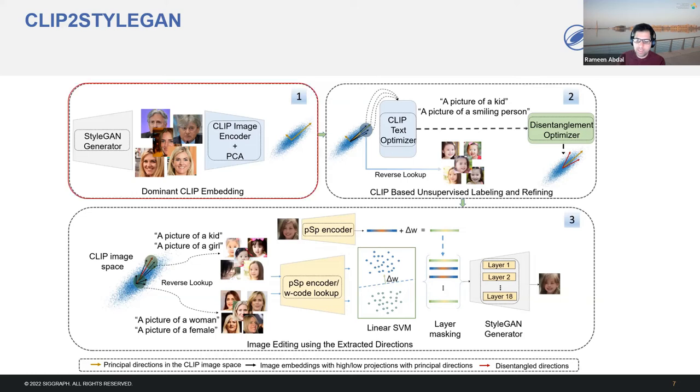First, dominant image embedding is used to encode CLIP image features and performing methods like PCA in order to extract important directions. Second, CLIP-based unsupervised labeling and refining is used to determine the labels of the direction using the CLIP text encoder. Then, these directions are disentangled using these labels. Third, the samples from these directions are used to create a dataset to train a classifier, in this case SVM, to transfer the direction to the StyleGAN space for editing applications.